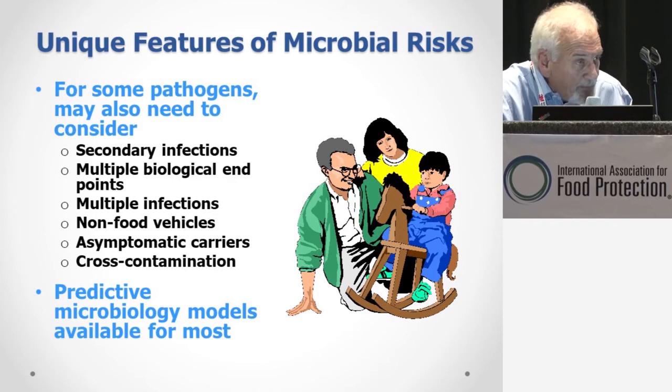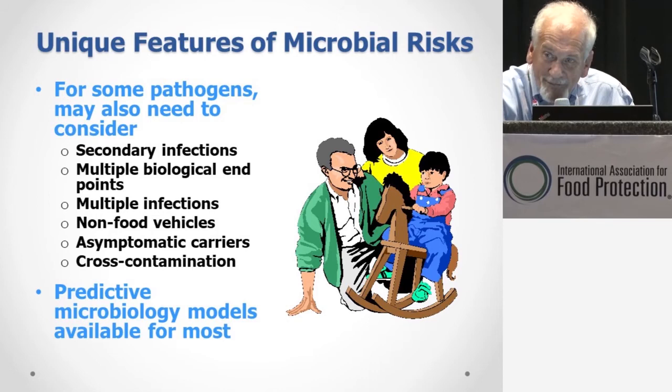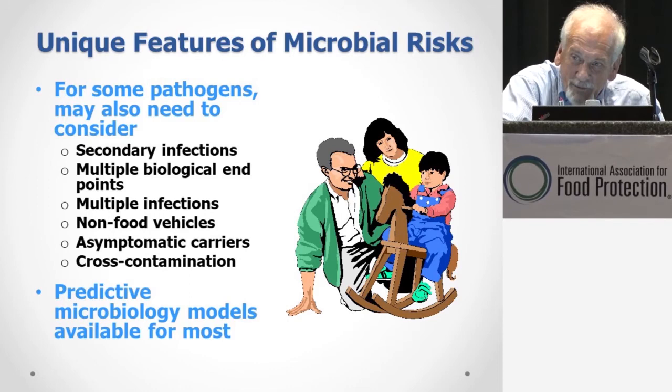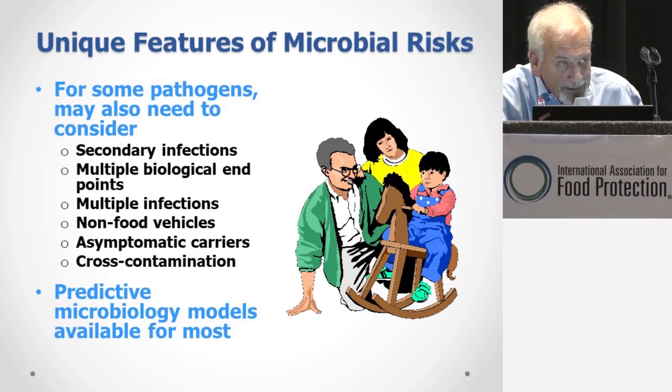Some other unique features of food organisms: very often we will have secondary infections. The classic example is a norovirus infection on a cruise ship — you get one person that comes in with it, gets sick, and then gets the other thousand people on the cruise ship ill, and you have to turn the boat around.